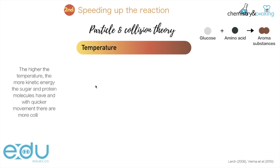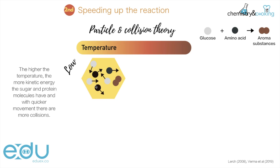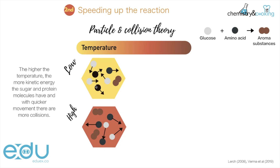Temperature. With a higher temperature there is more kinetic energy, so sugar and protein molecules move quicker, and with quicker movement you have more collisions. At low heat they have little energy, and even if they collide there might not be a successful collision because they don't have enough energy — the kinetic energy is represented by the shorter arrow, so there is low kinetic energy present and we have some aroma substances being produced. Now if we increase the heat and temperature, the kinetic energy increases, represented by the larger arrow. The molecules move about much quicker with more energy, resulting in more successful collisions, and hence we have more aroma substances being produced.